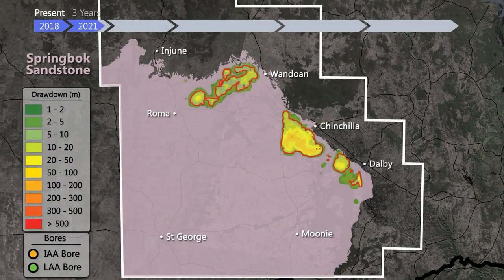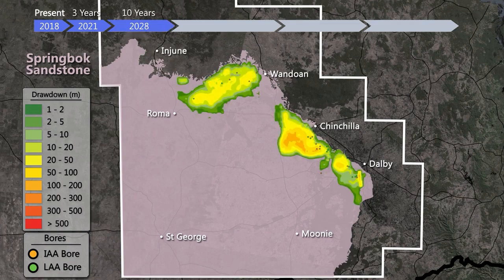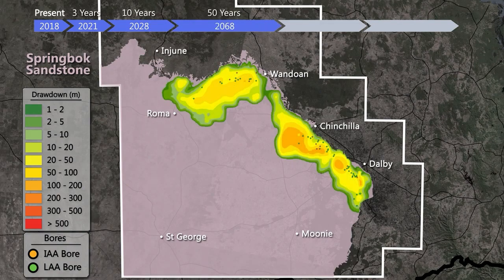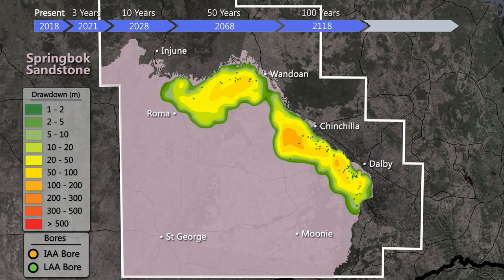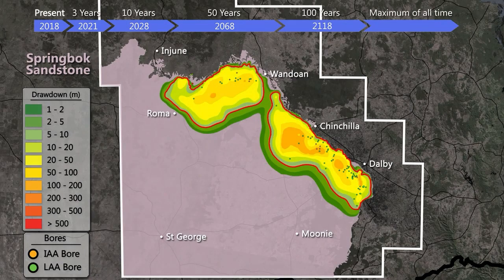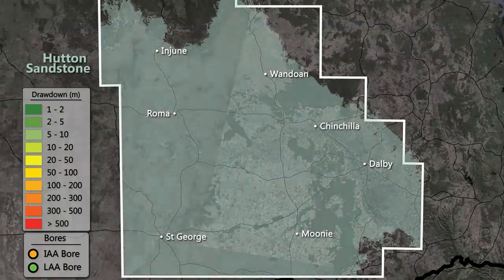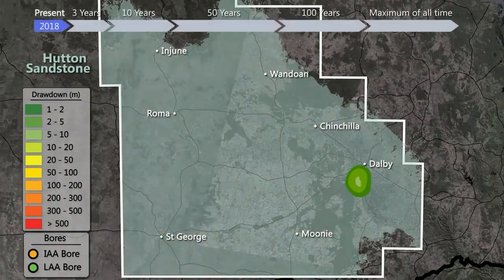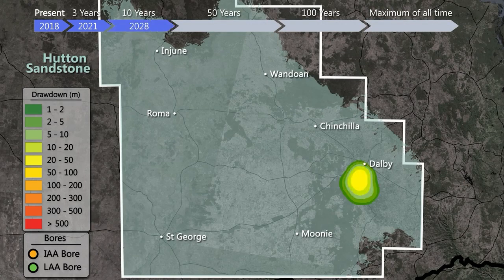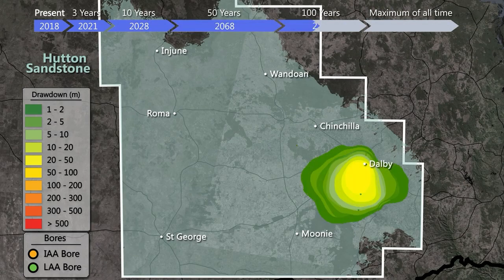The Springbok Sandstone, which directly overlies the Walloon coal measures, is predicted to have water level declines around active CSG fields of generally about 20 to 50 metres. The Hutton Sandstone, which is the aquifer below the Walloon coal measures, is only predicted to be affected in the south-eastern part by generally about 10 metres.